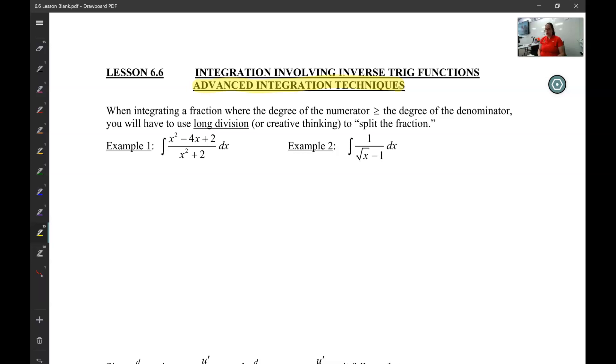So the first one we're going to learn is where the degree of the numerator is greater than or equal to the degree of the denominator. Now, just to review, degree is the biggest exponent. So if the biggest exponent in the numerator is greater than or equal to the biggest exponent in the denominator, you must do long division first.